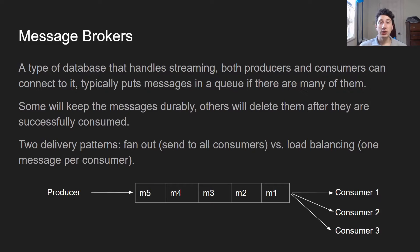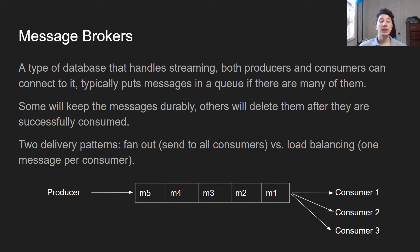So there are basically two delivery patterns for a message broker. One is fanout, which means every message that's in the broker is going to be sent to all consumers that are subscribed to the broker. And there's also load balancing, which is basically saying in order to maximize throughput and performance, each one of the consumers is going to only handle one message in order to process as many messages as we can at a time.